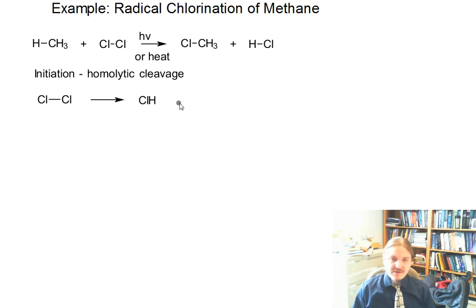So homolytic cleavage involves breaking the chlorine-chlorine bond up into two chlorine radicals. Make this look just a little bit prettier. Now let's go grab our radical arrows, and away we go. In the homolytic cleavage step we're looking at breaking the chlorine-chlorine bond. One electron goes with each chlorine atom, two chlorine radicals.